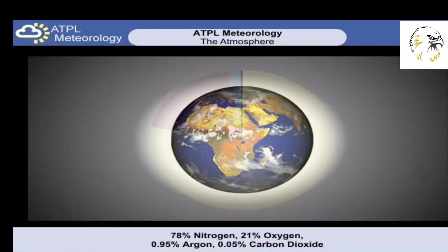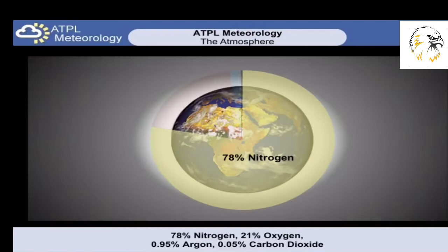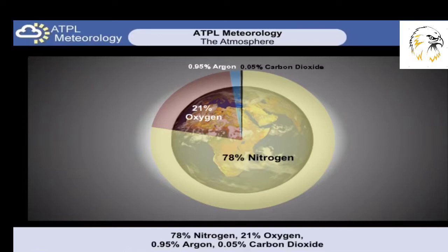There are various major gases that make up our atmosphere. The most common gas is nitrogen, which accounts for about 78% of the atmosphere. Oxygen is sometimes misconceived as being the most abundant gas, but it represents only 21%. Just under 1% is argon, with carbon dioxide and a few others making up the rest.